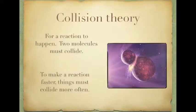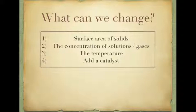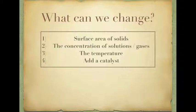There are four main areas of collisions — four things we can change which can increase or decrease the amount of collisions that happen. The first is to do with the surface area of a solid. The second is the concentration of solutions and gases. The third is temperature, which has a very interesting effect on the rate of collisions. And we're also going to look at what a catalyst does.